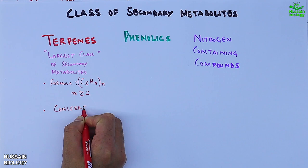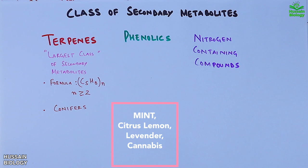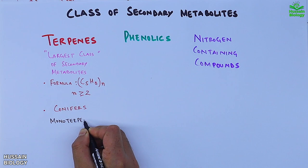But we have terpenes also found in mint, citrus lemon, lavender, lemongrass, cannabis and many more. In terpenes we have further subclasses like monoterpenes C10, sesquiterpenes C15 and diterpenes C20.